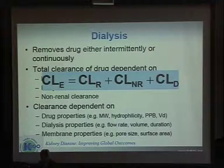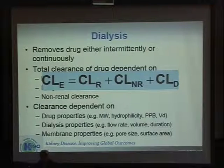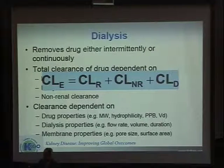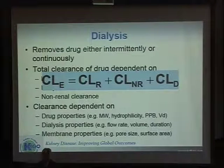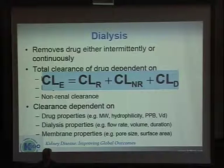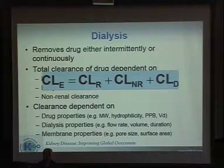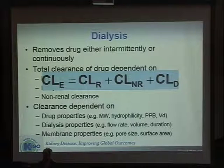The clearance with dialysis will depend on three major factors. First, the drug properties — something related to the drug itself, like the molecular weight, hydrophilicity, whether it is lipid-soluble or not, protein binding, and volume of distribution. We also have the dialysis procedure properties, like the flow rates, the volume, and the duration. And we also have membrane properties, like the pore size and the surface area.